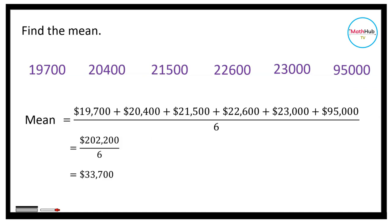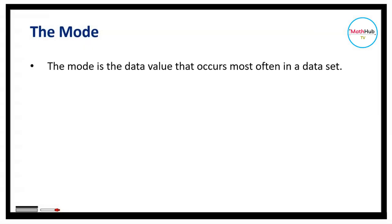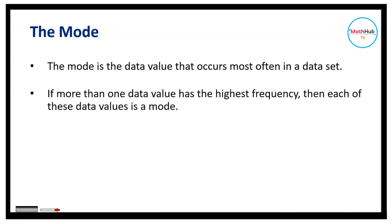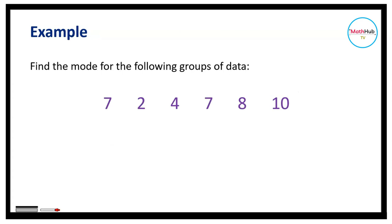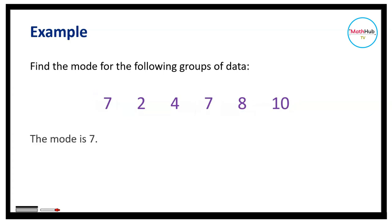The mode is the data value that occurs most often in a data set. If more than one data value has the highest frequency, then each of those values is a mode. If no data value occurs most often, the data set has no mode. For example, in the set 7, 2, 4, 7, 8, 10 — the number 7 appears twice, so the mode is 7.